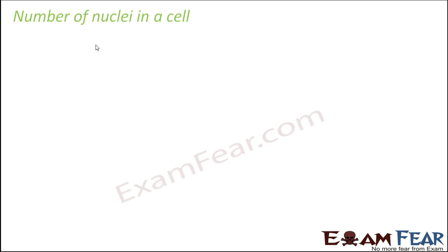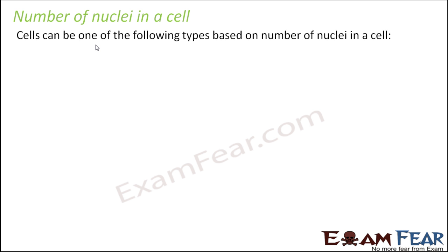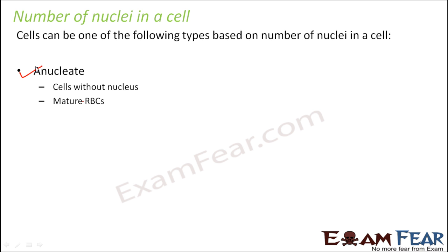Now let us talk about the number of nuclei in a cell. Is it necessary that one cell has only one nucleus, or can a cell have more than one? The number of nuclei in a cell actually varies, and depending on that, cells can be divided into three types. The first is anucleate - cells without a nucleus. You might wonder how cells can survive without a nucleus.